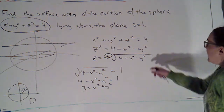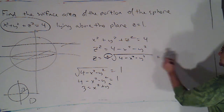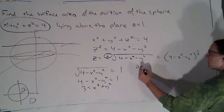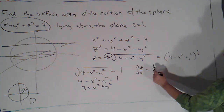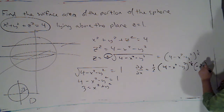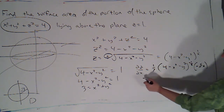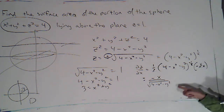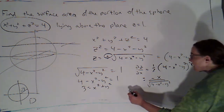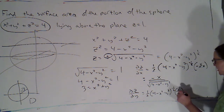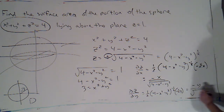The formula for z as a function of x and y also gives me my partial derivatives. Writing z as the quantity 4 minus x squared minus y squared to the 1/2 power, the partial of z with respect to x is one half times 4 minus x squared minus y squared to the negative 1/2, times negative 2x by the chain rule. Canceling the 2s gives negative x over root 4 minus x squared minus y squared. Similarly, the partial of z with respect to y is negative y over root 4 minus x squared minus y squared.